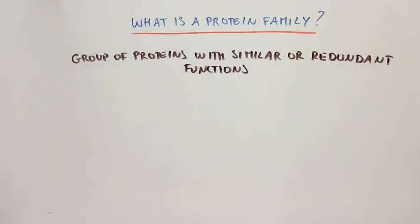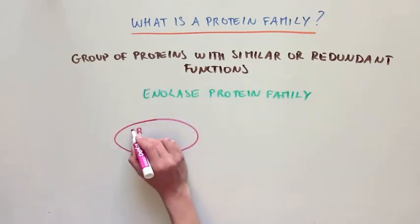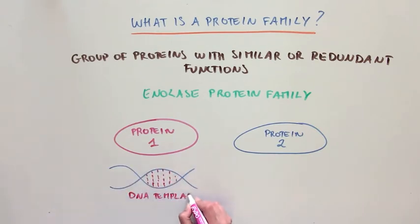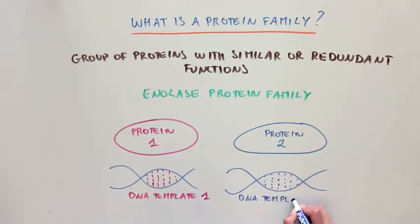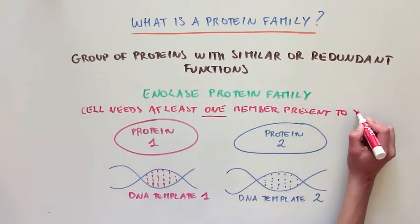So, in this case, let's take the anylase protein family. This protein family is made up of two proteins that come from two different DNA templates. And these proteins all play very similar or redundant functions. In order to survive, the cell needs at least one of the two members of the family to be present.